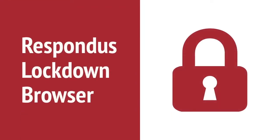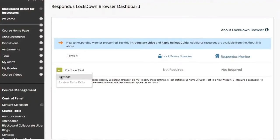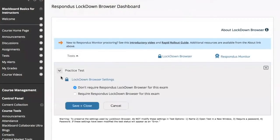For more test security, use Respondus Lockdown Browser. When students use Lockdown Browser to take a Blackboard test, they are unable to print, copy, go to other websites, access other applications, or close a test until it is submitted for grading. To set up a test in Blackboard that requires Lockdown Browser, go to Course Tools on the bottom left menu and choose Respondus Lockdown Browser. A list of deployed tests will display on the dashboard. Select Settings and then choose the option Require Respondus Lockdown Browser for this exam. You may also set a password for this exam and choose from other advanced settings.